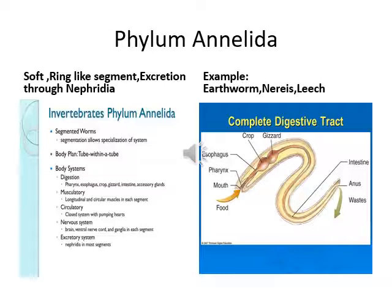From the intestine, waste is excreted through special tubes called nephridia. They have a closed circulatory system with a heart, a brain and nerve cords as a nervous system, and excretion is done by nephridia. Examples are earthworm, Nereis, leech, and sandworm.